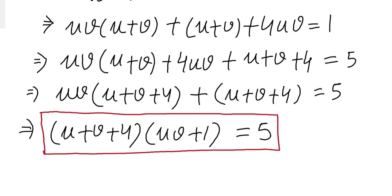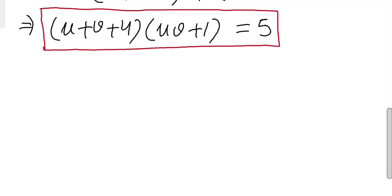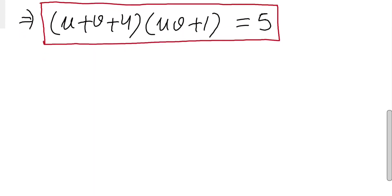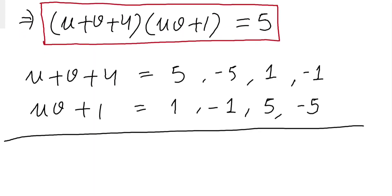So now, these quantities must be one of the factors of 5. So let's define them. These are the possible factors.